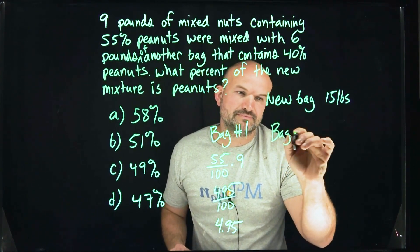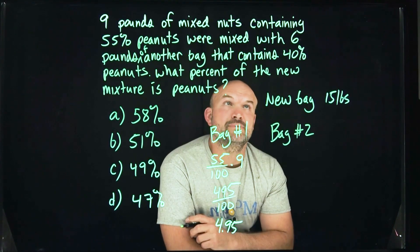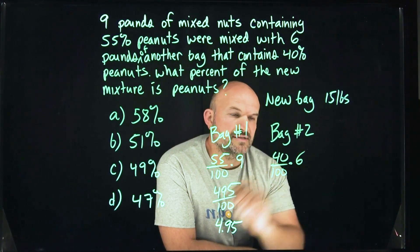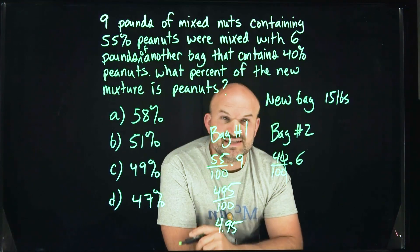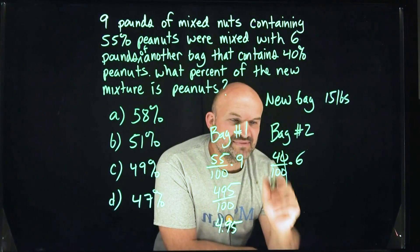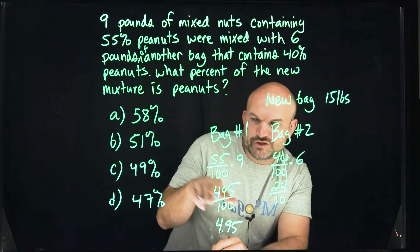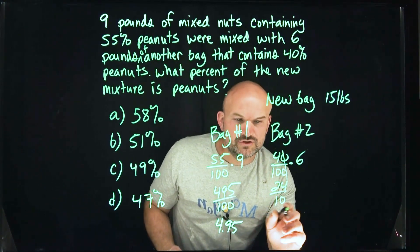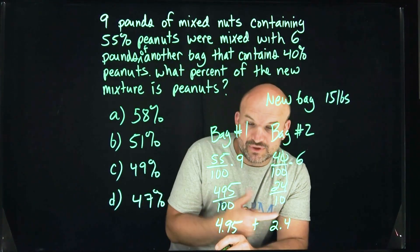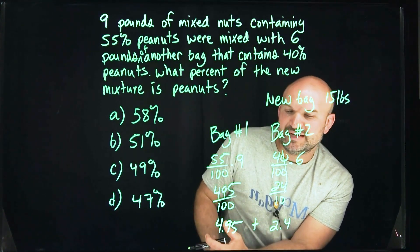Now let's look at bag number two. Bag number two is 40% out of six pounds. We do the same thing: 40 over 100 times six. We can cancel the zeros, giving us 4 over 10 times 6, which is 24 over 10. Just like moving the decimal point — but only once this time — we get 2.4. That's the total number of peanuts in bag number two.